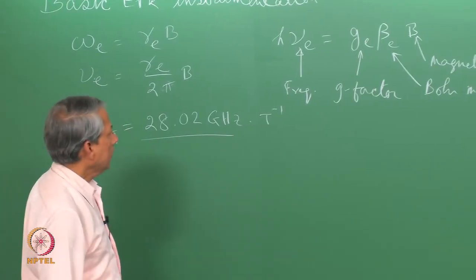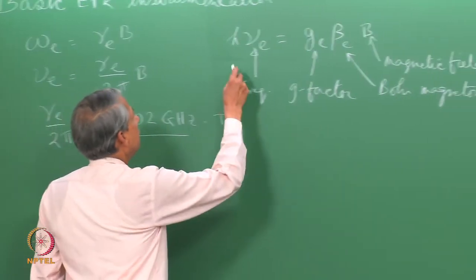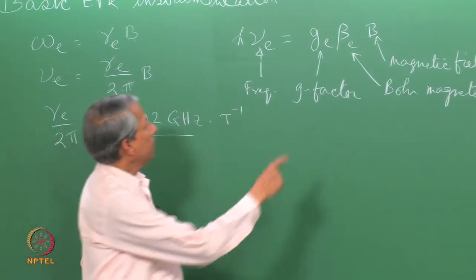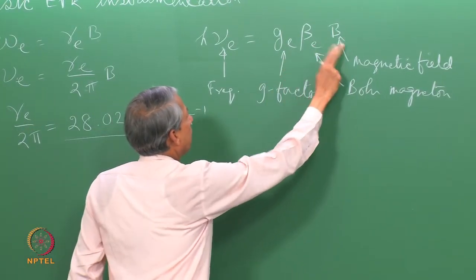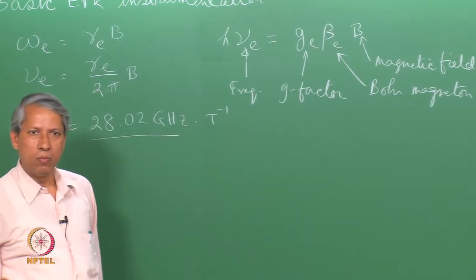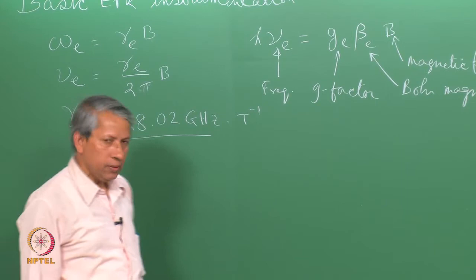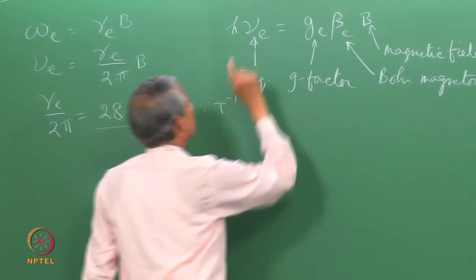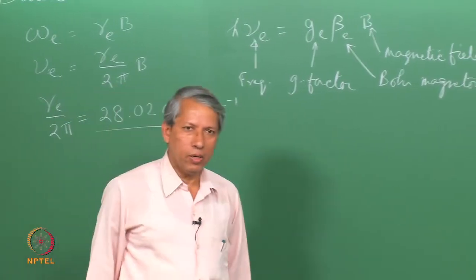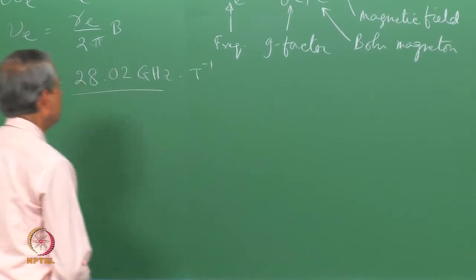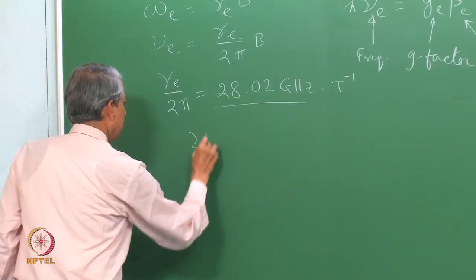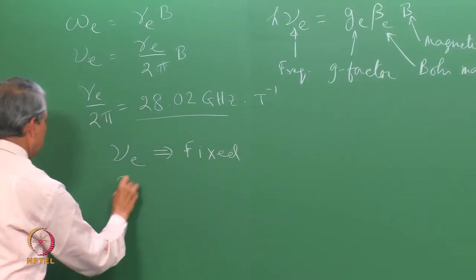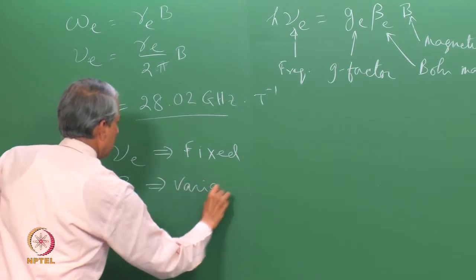To recapitulate our earlier understanding: we can either vary the frequency and keep the magnetic field constant, or vary the magnetic field and keep the frequency constant. Both are possible in principle, but in practice it is almost always true that we vary the magnetic field and keep the microwave frequency fixed. We will see several reasons why that is so.